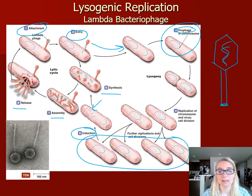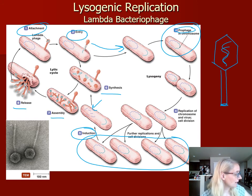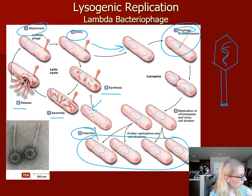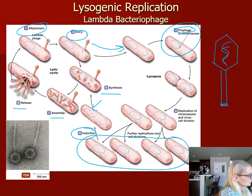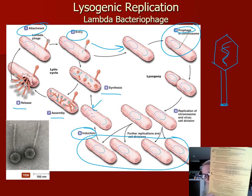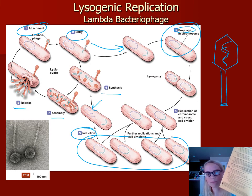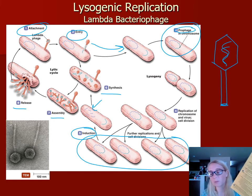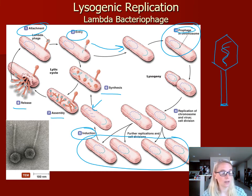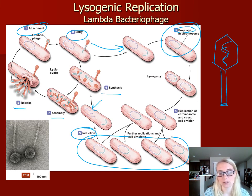The next thing we're going to look at is animal virus replication. I have a handout — I'll post it if I haven't already. It covers biosynthesis of DNA and RNA animal viruses. Print it off if you want, or follow along as I draw pictures on the screen illustrating the processes of animal virus replication. That's where we're headed next.